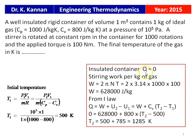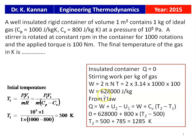It is an insulated container, so there is no heat transfer: Q = 0. The stirrer work is W = 2πNT = 2 × 3.14 × 1000 × 100 = 628,000 joules per kilogram.